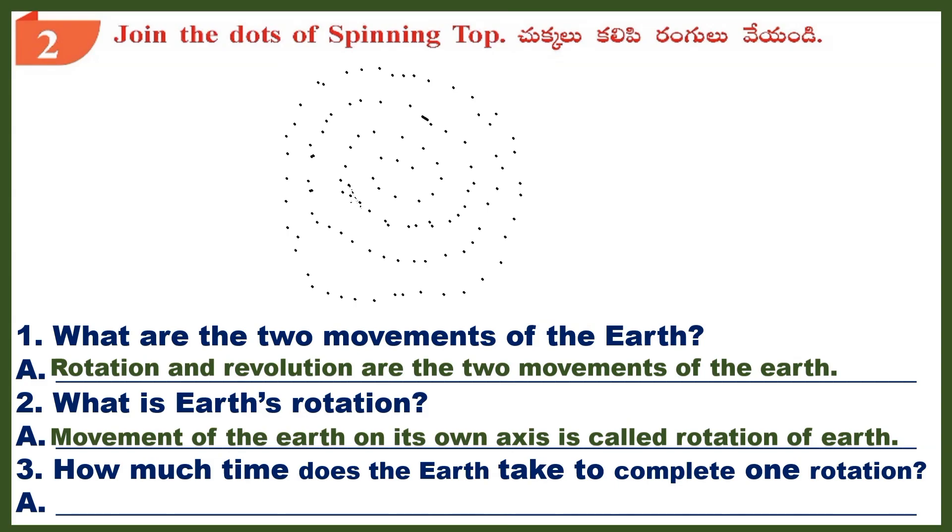Question 3: How much time does the Earth take to complete one rotation? Answer: 24 hours.